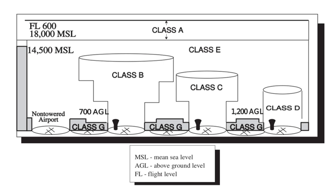Controlled Firing Areas (CFAs) contain activities which, if not conducted in a controlled environment, could be hazardous to non-participating aircraft. The difference between CFAs and other special use airspace is that activities must be suspended when a spotter aircraft, radar, or ground lookout position indicates an aircraft might be approaching the area. There is no need to chart CFAs since they do not cause a non-participating aircraft to change its flight path.